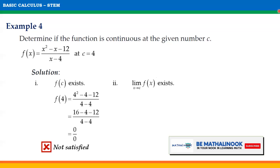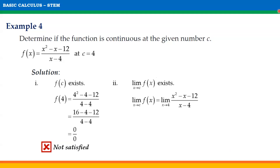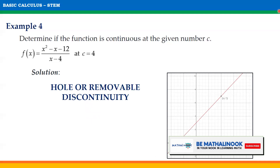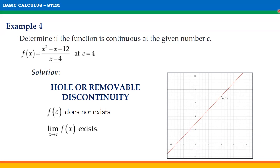Even though f(4) does not exist, the limit of the function at 4 still exists. The limit of (x² − x − 12)/(x − 4) as x approaches 4 can be evaluated by factoring the numerator as (x − 4)(x + 3), canceling the common factor (x − 4), leaving the limit of (x + 3) as x approaches 4. By direct substitution, this equals 4 + 3 = 7. Since the limit exists, this discontinuity can be removed by redefining the function at 4. This is an example of hole or removable discontinuity, which happens when f(C) does not exist but the limit of f(x) as x approaches C exists.